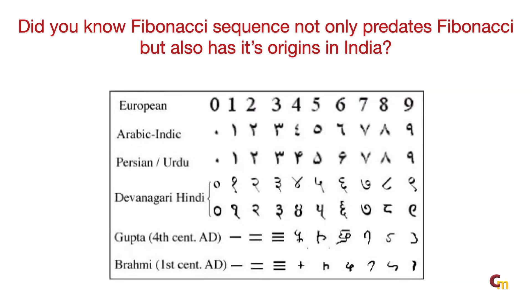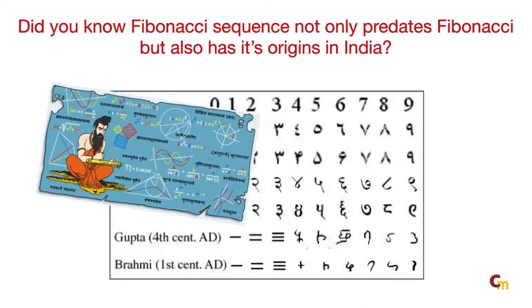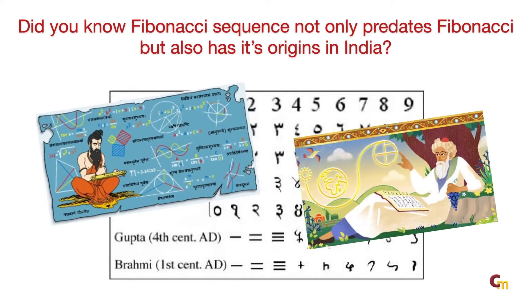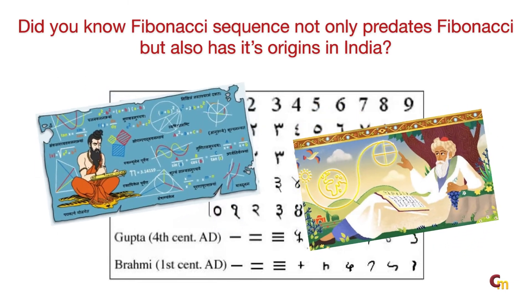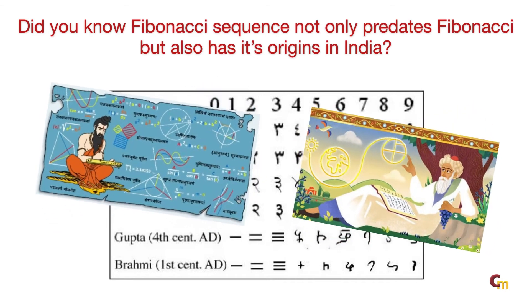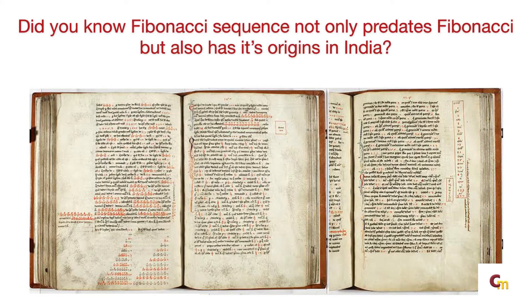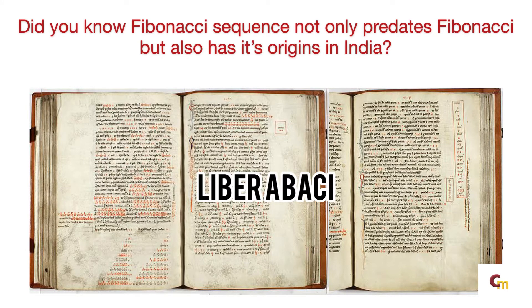The Indo-Arabic numeral system was invented by Indian mathematicians between the 1st and the 4th century AD, and later — like many other subjects — adopted by Arabic mathematicians in the 9th century. Fibonacci is credited with writing various mathematical manuscripts, of which Liber Abaci — Book of Calculation — is one of the most well-known.